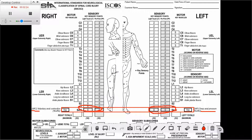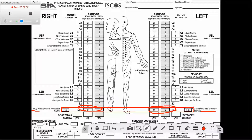The physician, with a gloved finger, will place the finger near the anal sphincter and ask the patient to exert voluntary contraction on the finger. If the patient is able to do it, we indicate 'yes'; if not, it will be 'no.' This is for the voluntary anal contraction, which is a motor response. For deep anal pressure, we ask the patient about their ability to feel this type of pressure in the anal sphincter — again, the answer is either yes or no. The S4-S5 row on the sheet specifies all these different things we will examine.